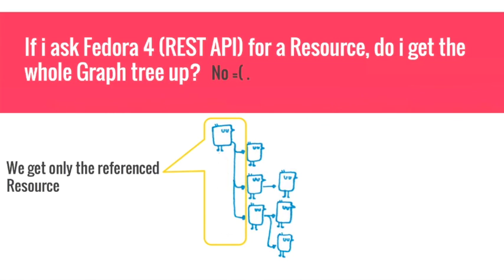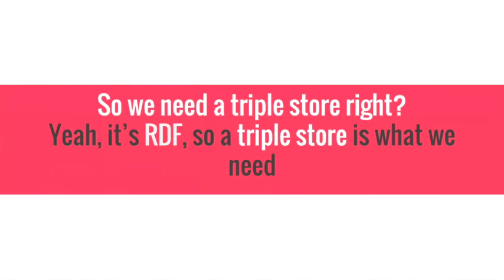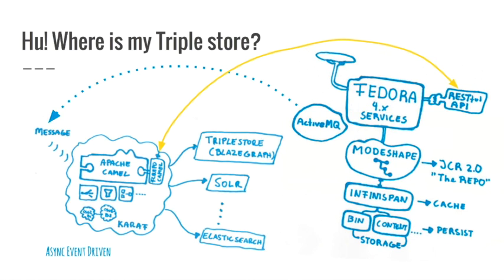So I ask myself: if I go and ask Fedora 4, using the REST API, for a resource, will I get this whole graph back? Well, no. We only get the current resource and all the resources referenced using RDF — only this space. So if we have datastreams, we won't see what those datastreams look like. A graph can be very big, and getting everything at once — especially with all the linking resources — can be impossible to manage. So we need some aid.